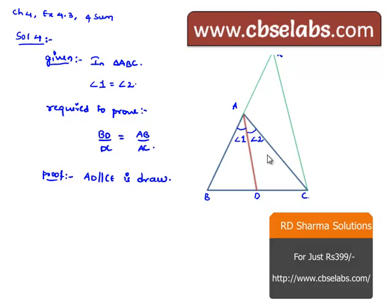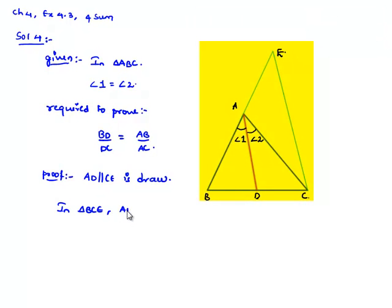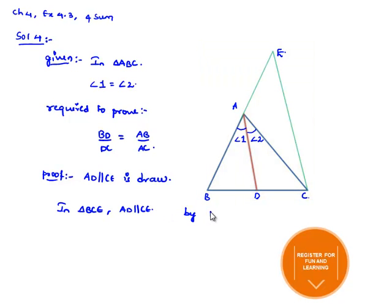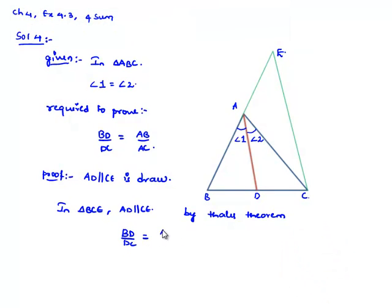Now if we observe, in triangle BCE, AD is parallel to CE. Therefore by applying Thales theorem, we can say that if a line is drawn parallel to one of the sides of a triangle and it is passing through other two sides, then it divides the two sides in the same ratio. Therefore here we can say that BD by DC is equal to AB by AE.